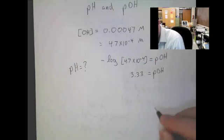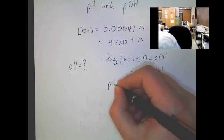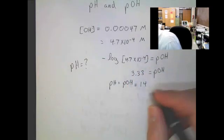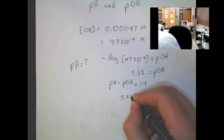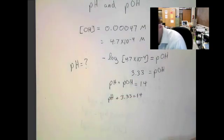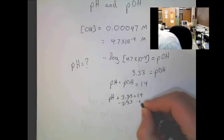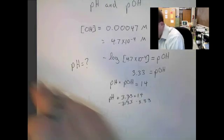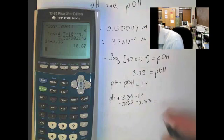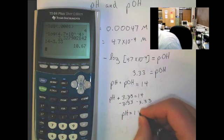Now, this is not the pH, but we want to find the pH. So, remember, pH plus pOH is equal to 14. So, if we have 3.33, then all we need to do is subtract that from 14. So, 14 minus 3.33 gives us a pH of 10.67.